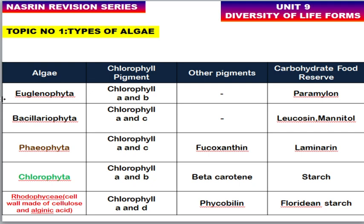Algae are classified into 5 types: Euglenophyta, Chrysophyta, Phaeophyta, Chlorophyta, and Rhodophyta. Chlorophyll A and B are present in Euglenophyta and Chlorophyta, whereas Chlorophyll A and C are present in Chrysophyta and Phaeophyta. With respect to red algae (Rhodophyta), Chlorophyll A as well as Chlorophyll D are present.